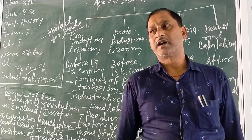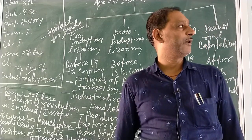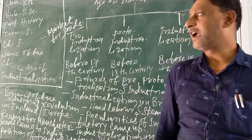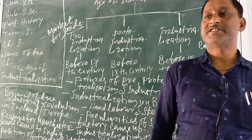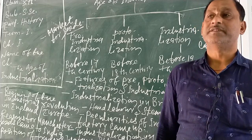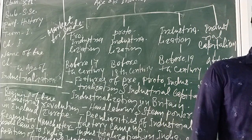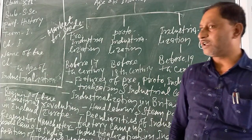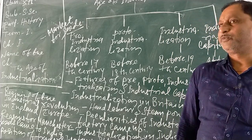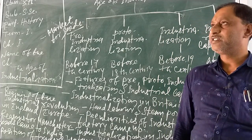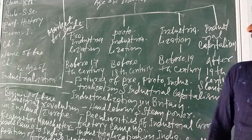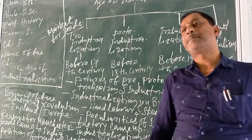Proto-industrialization was the period which started before the 18th century, when over the country different types of intricate designs were produced and then finished at the central town of London. London was the finishing center where all manufactured products were finished and after that domestically circulated.